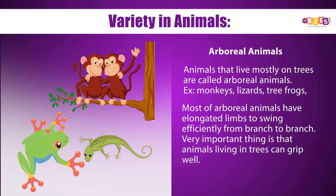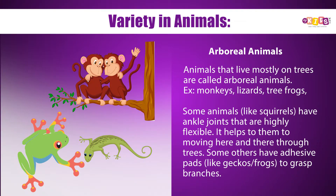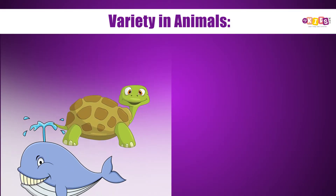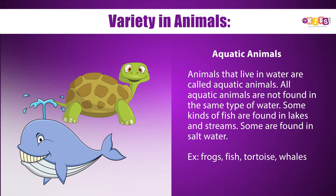Arboreal animals: Animals that live mostly on trees are called arboreal animals — example: monkeys, lizards, tree frogs. Most arboreal animals have elongated limbs to swing efficiently from branch to branch. Animals living in trees can grip well. Some animals like squirrels have highly flexible ankle joints that help them move through trees.